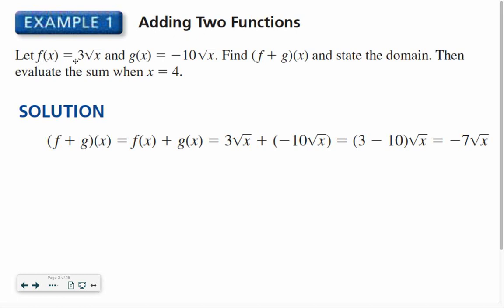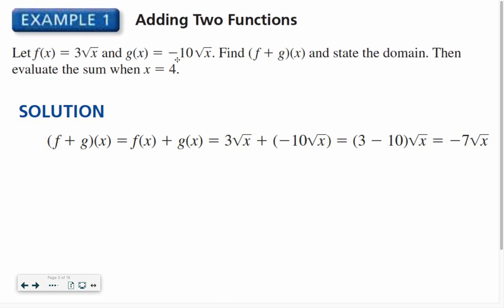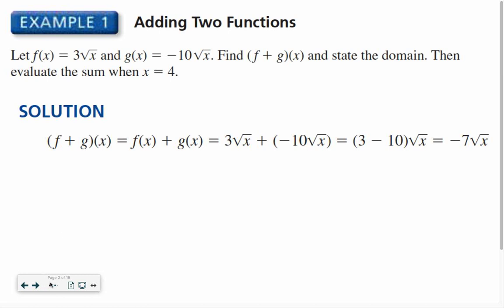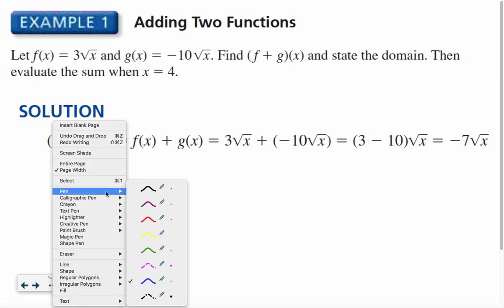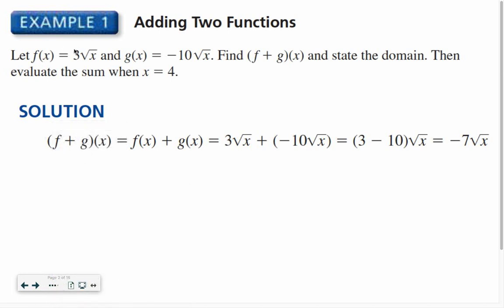So in this example, let f of x equals 3 times the square root of x, and g of x is negative 10 times the square root of x. So 3 times the square root of x here and 10 times the square root of x here. Find f plus g of x and state the domain, then evaluate the sum when x equals 4.